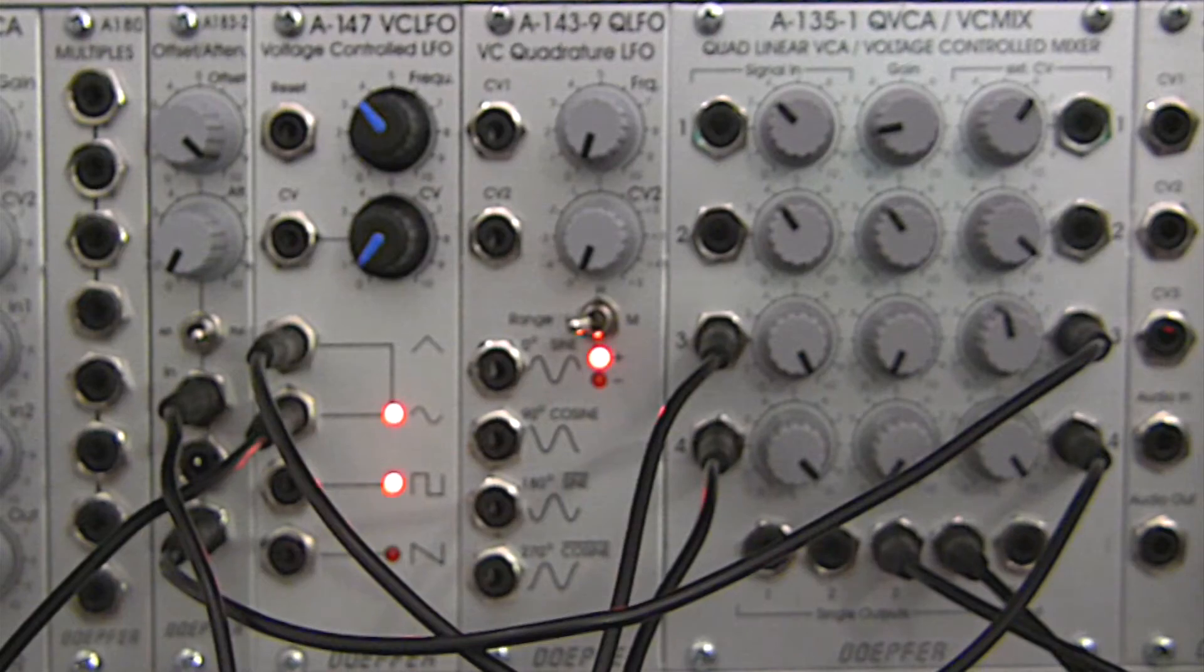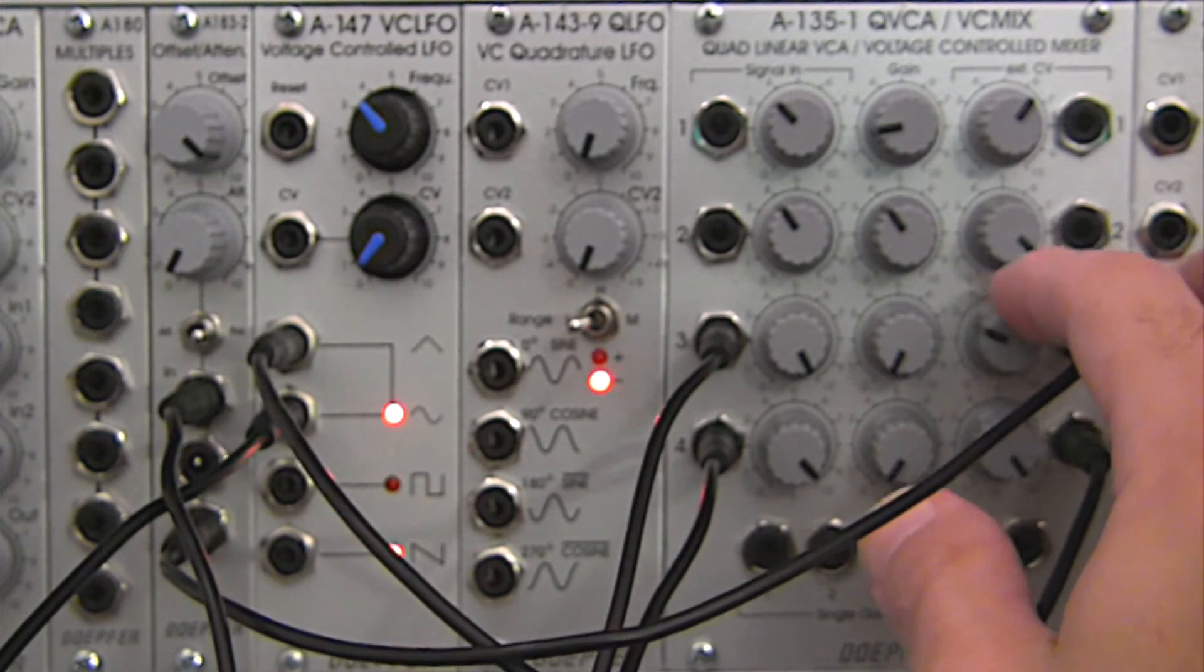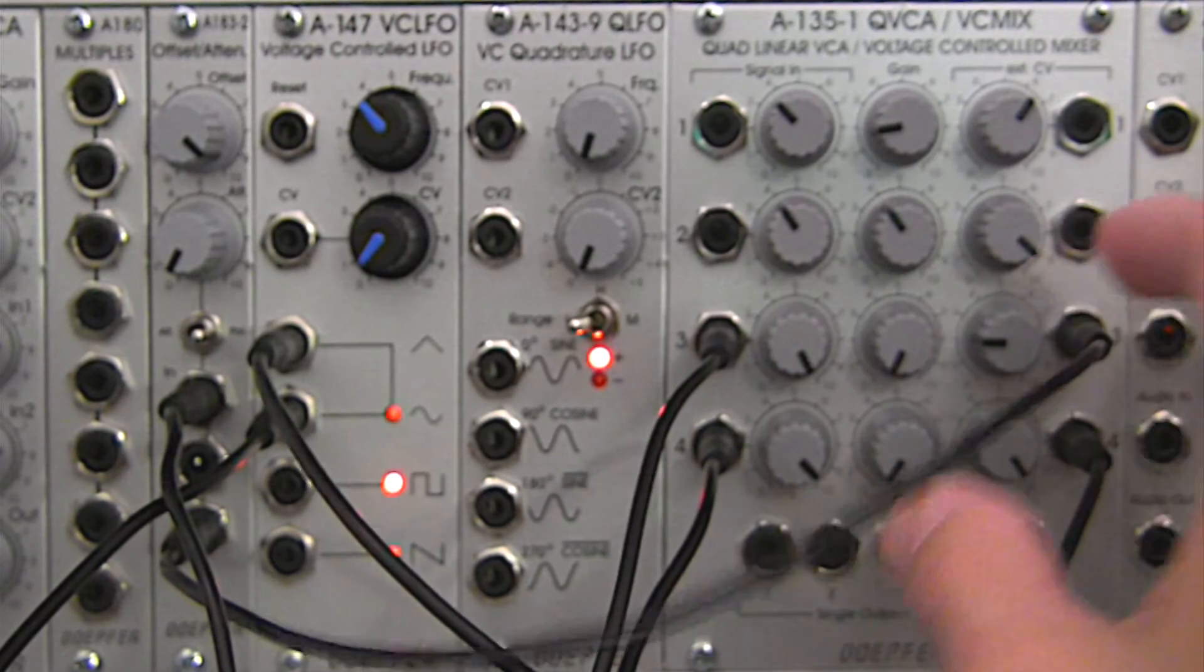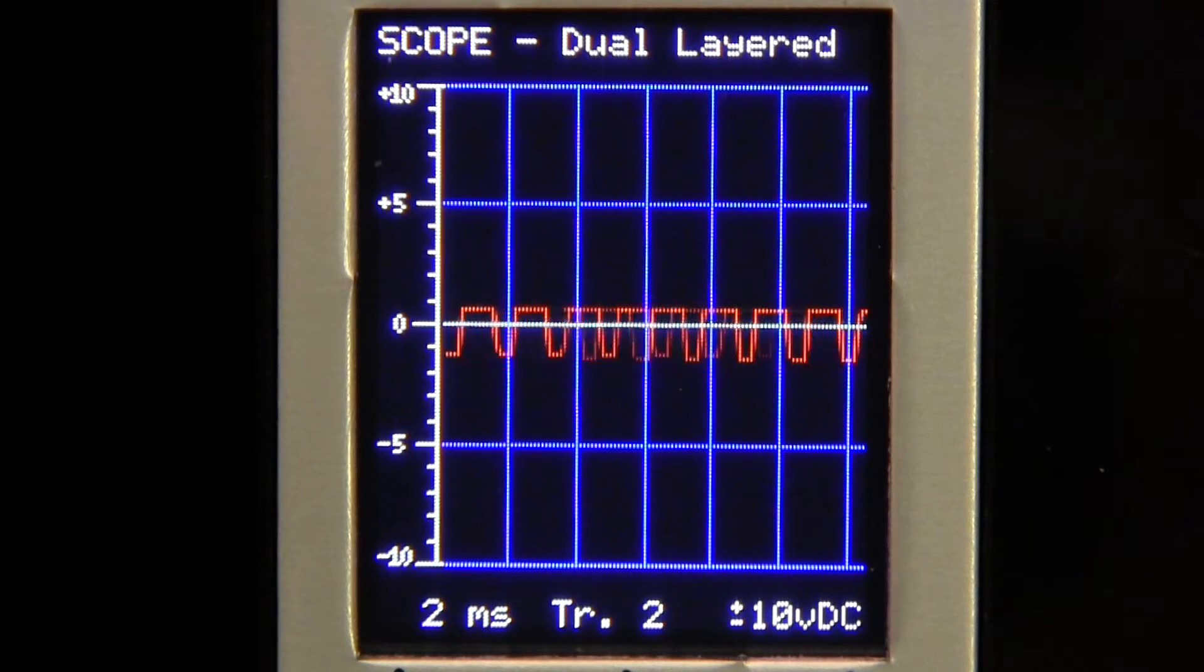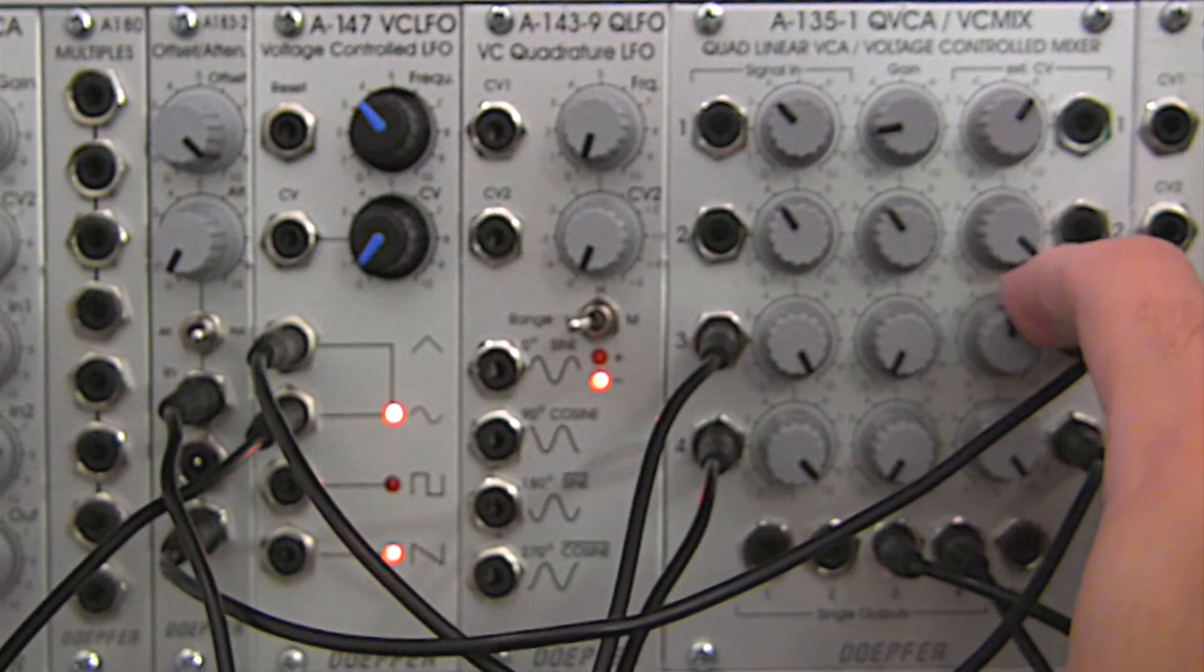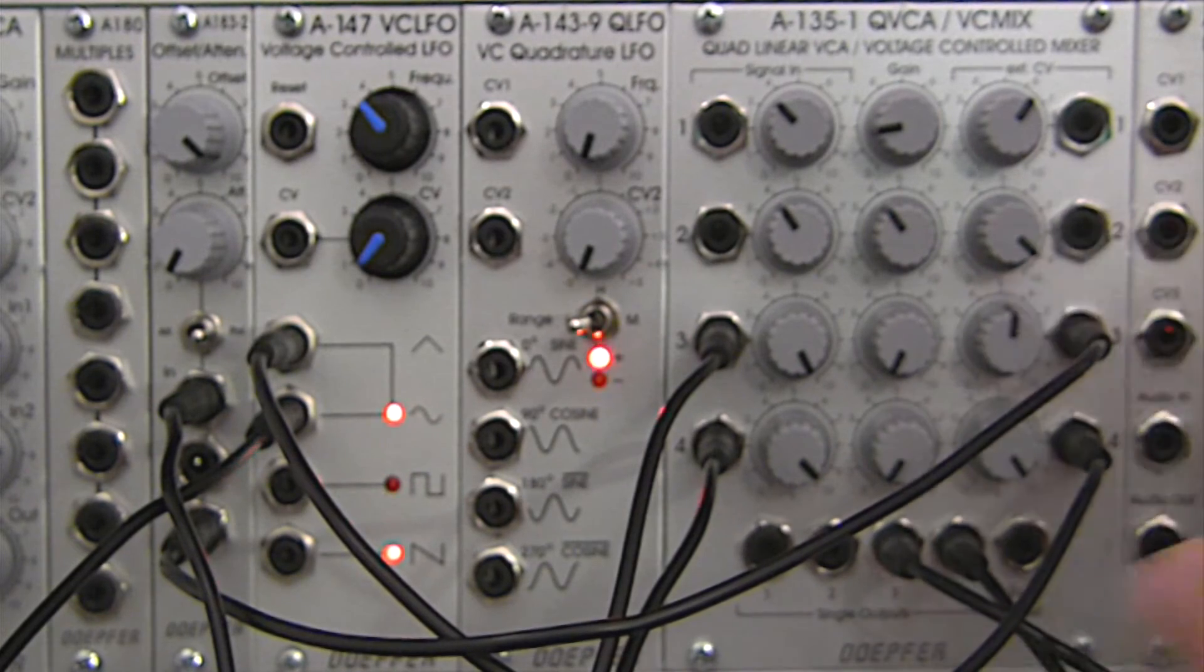At this point now, I could go in and adjust the overall CV level. Like if I didn't want as much CV to go to my VCA on channel three, I could bring down the level right there. You can barely see it jumping up a little bit right there. But if I want more of my CV to affect it, I can bring that level up.